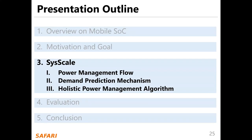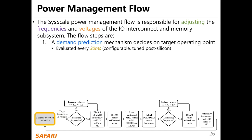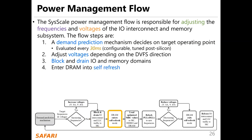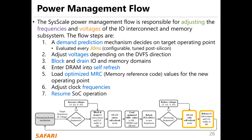I will explain each of the three C-Scale components. The first component is the C-Scale power management flow, which is responsible for adjusting the frequencies and voltage of the IO interconnect and the memory subsystems. The steps of the flow are: a demand prediction mechanism evaluated every 30ms decides on the target operating point; we adjust the voltage depending on the DVFS direction; next is a block and drain of the IO and memory domains; we place the DRAM into self-refresh mode; we load the optimized MRC values for the new operating point; we adjust the clock frequencies; and finally we resume the SoC operation.